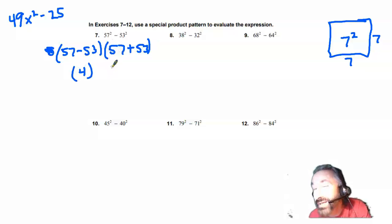And then 57 plus 53. I'm hopeful you might be able to do the addition in your head. It's going to be 50 and 50 is 100, 7 and 3 is 10. So that's 110.